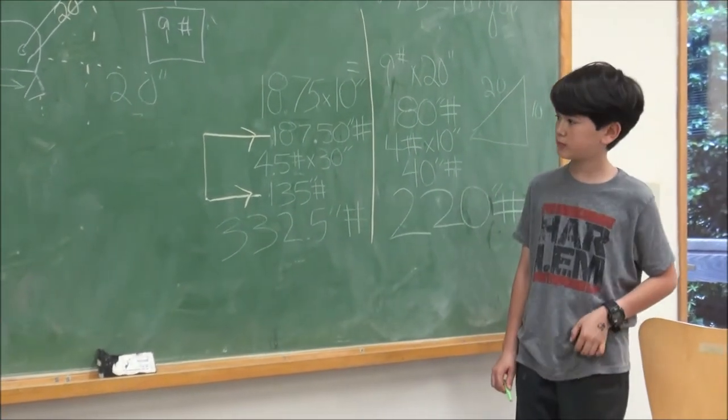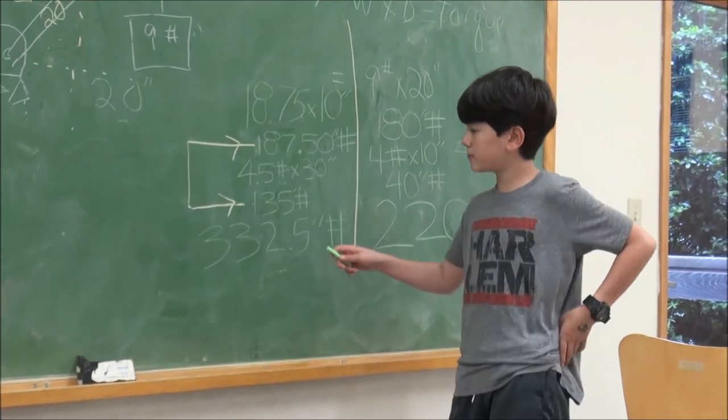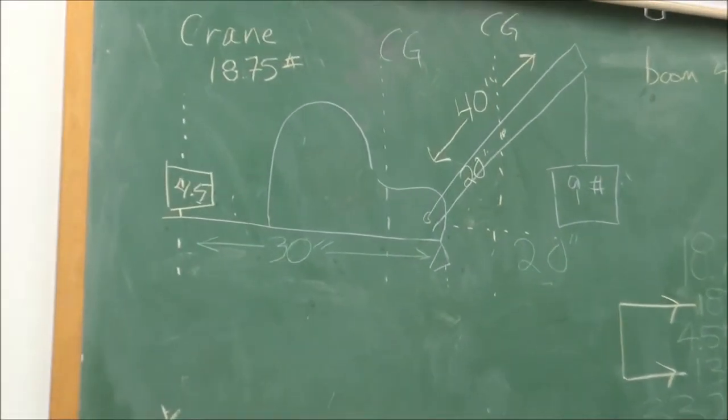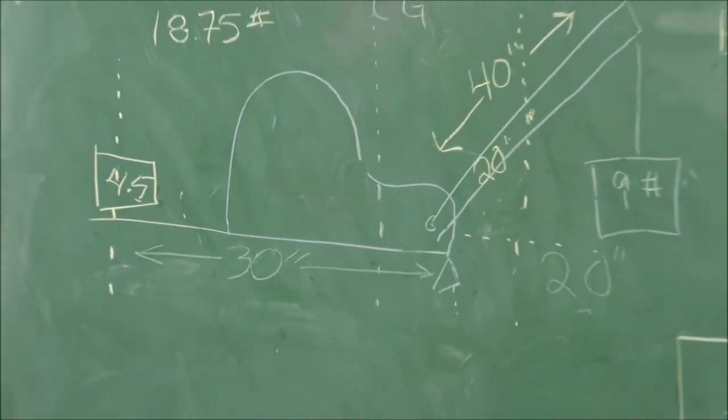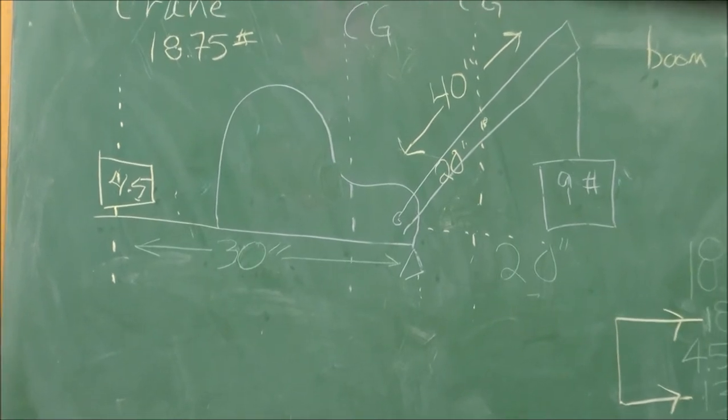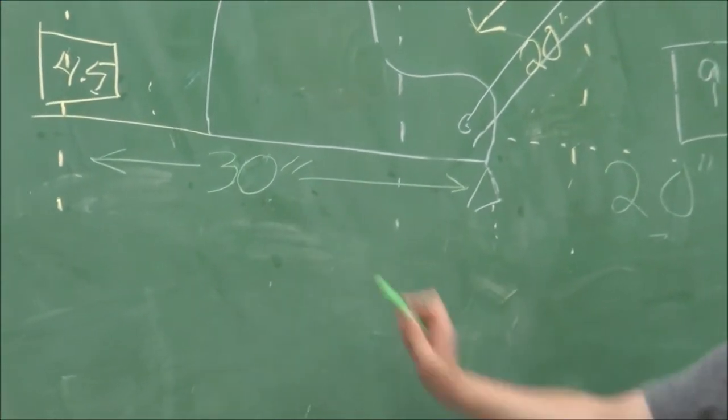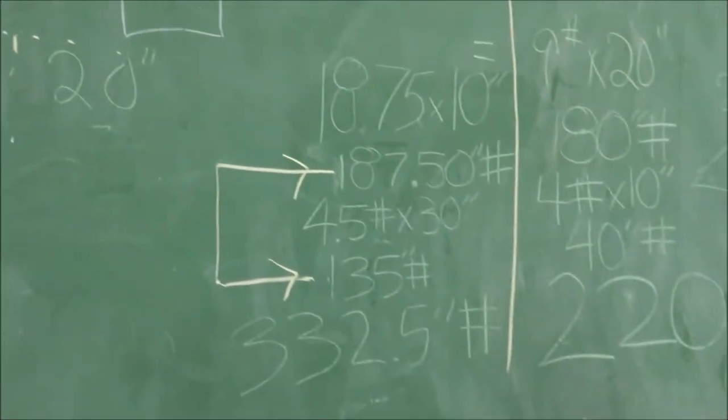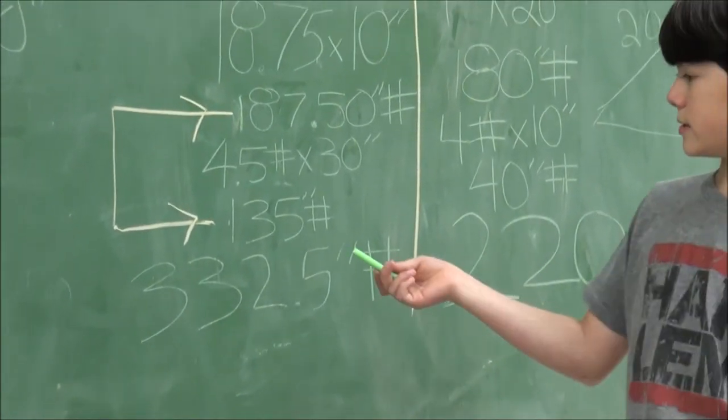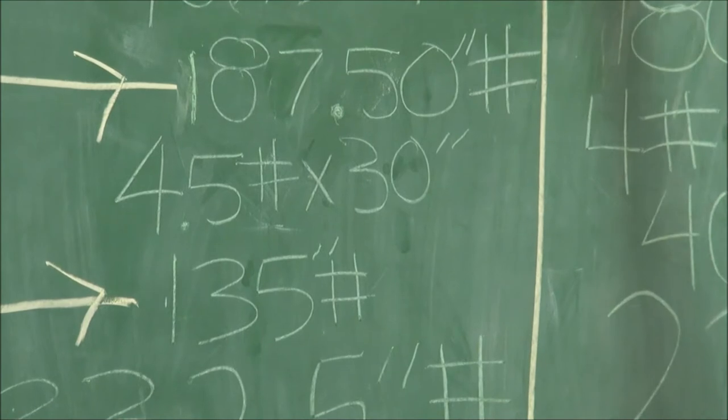Okay, Ben. We added one brick, which is 4.5 pounds. And the distance from the center of gravity of the brick to the pivot point was 30 inches. Weight times distance.